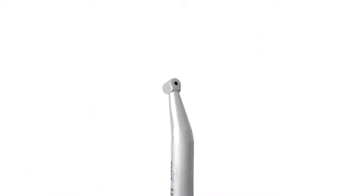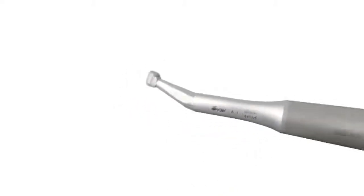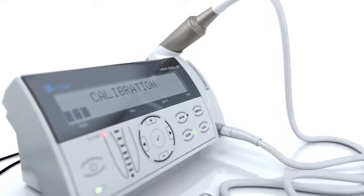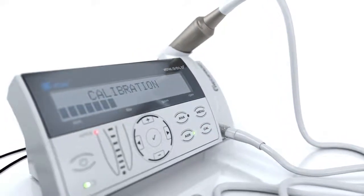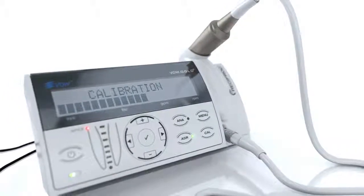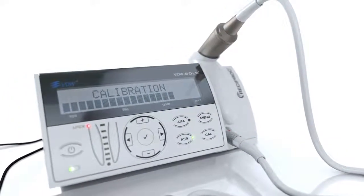After proper care and maintenance, the contra angle can be put on the micro motor. Then press the CAL key. The calibration is important to ensure the contra angle's torque accuracy. The contra angle needs to be calibrated every time it is put back on the motor.